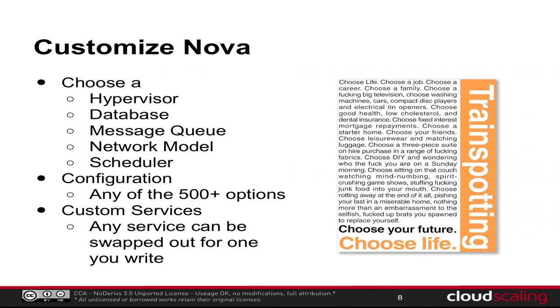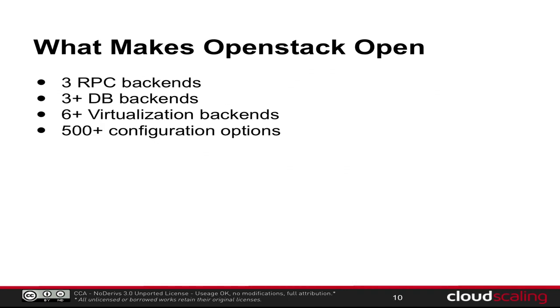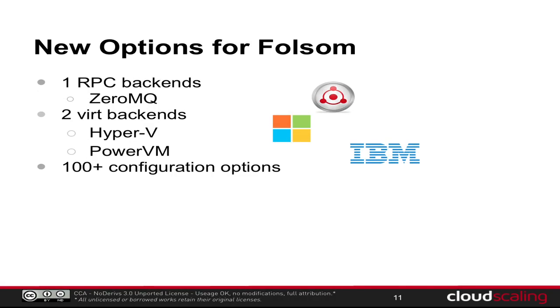You can customize Nova a lot further. You can choose any hypervisor, any database, any message queue, any network model — and there are 500 config options to play with. You can also swap out any of the services with anything you write. What makes OpenStack open? There are three RPC backends, three-plus database backends, six-plus virtualization backends, and 500 config options. You can run anything on the backend, and anybody can put in another driver — and we've seen that happen time and time again.